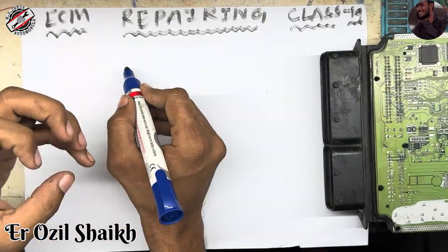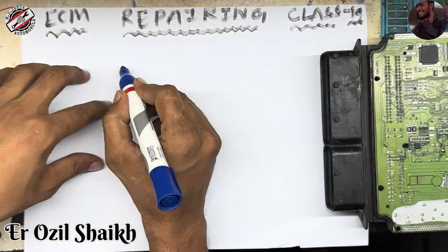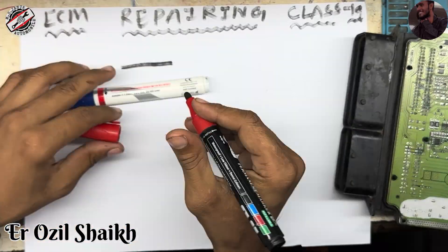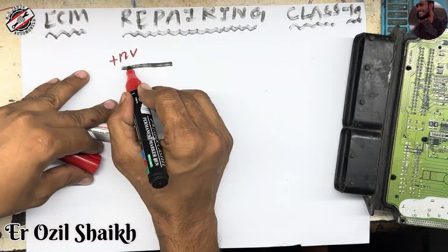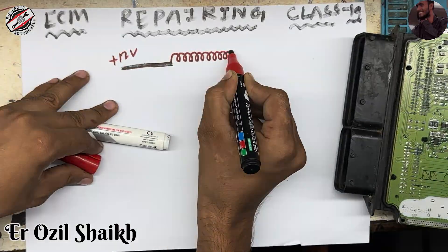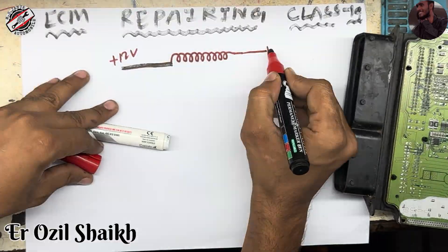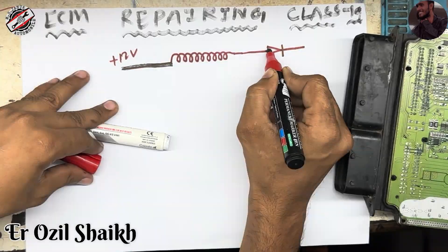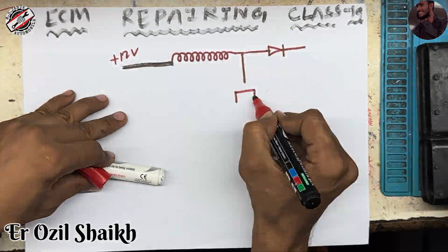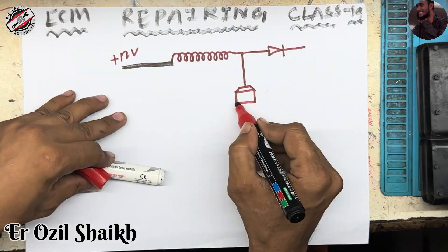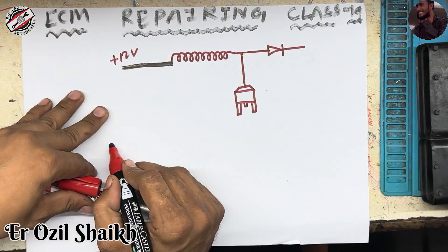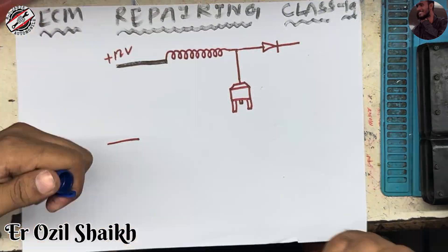Now I am going to draw a simple diagram. Here we have 12 volts input. I will take a red marker. Here we have a coil, and this coil has one diode connected to it. I am going to connect one N-channel MOSFET, and this is the ground.